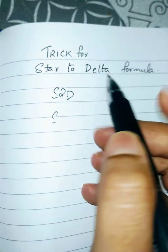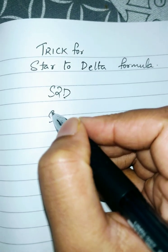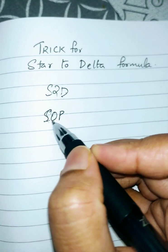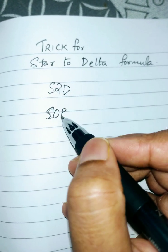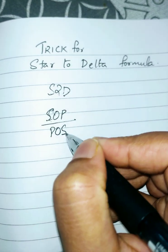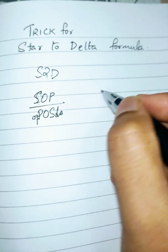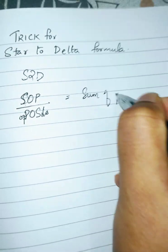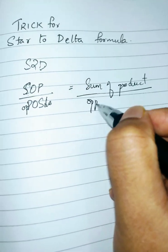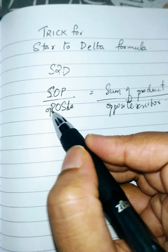The trick for the star-to-delta formula: the code to memorize is SOP. S2D (star-to-delta) is converted using SOP — where SOP stands for Sum Of Products, and the denominator is the opposite resistor. So the code is: SOP divided by the opposite resistor.